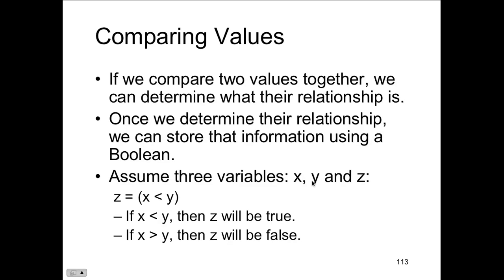We can compare two values together to determine their relationship: are they equal, is one less than the other, are they both not equal? We can store the result using a Boolean. Assign three variables x, y, and z — z equals (x < y). Whatever is inside the expression always evaluates to a Boolean; this is true for most programming languages. In other languages you have to declare z as a Boolean type. Here, if x is smaller than y it returns true, otherwise false, and that true or false is assigned to z.